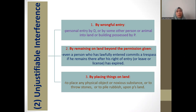That covers all the ways in which interference may be considered unjustifiable — interference not justified by law or not permitted by the plaintiff — giving the plaintiff the right to take action based on trespass to land. We were going to discuss some cases, but we have about 12 minutes left so we'll stop here.